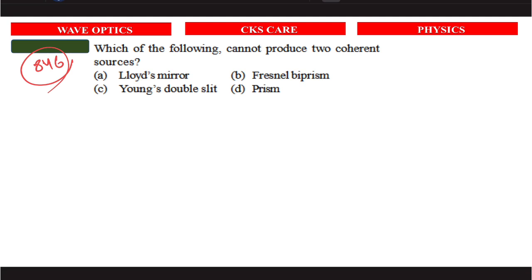Question 866: which of the following cannot produce two coherent sources? The answer is a prism. A prism cannot produce two coherent sources, so prism is the right answer.